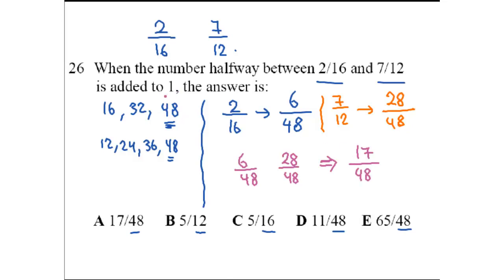But remember, the question said when that number is added to 1. So I need to add it to 1. Since I have a denominator of 48, then 1 can be rewritten as 48 over 48.